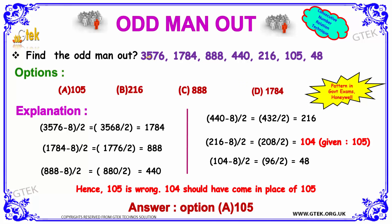You are able to see 3576, 1784, 888, and 440, 216, 105, 48. What is the relation we can create? 3576 minus 8, you will get 3568. And divided by 2, you got 1784. Good. We are able to get some relationship.